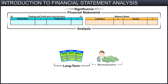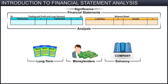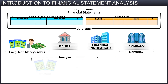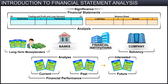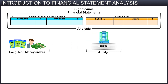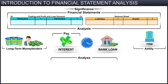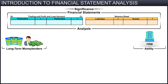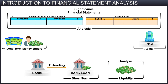Fourthly, long-term money lenders need to analyze the solvency position of a company. These lenders include banks and other financial institutions that analyze not only the current and past financial performance of a company, but are also interested in the future projected financial health of the company. They analyze the firm's ability to pay interest and the installments of principal loans on time by analyzing the profitability and capital structure relationships. Banks extending short-term loans also analyze the immediate liquidity position of a company.